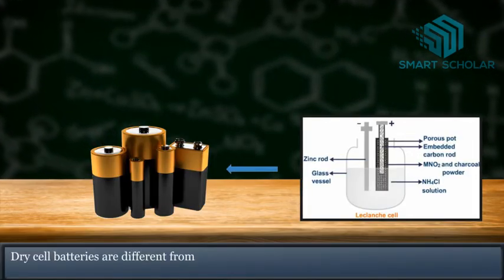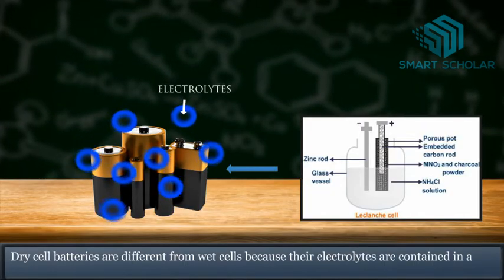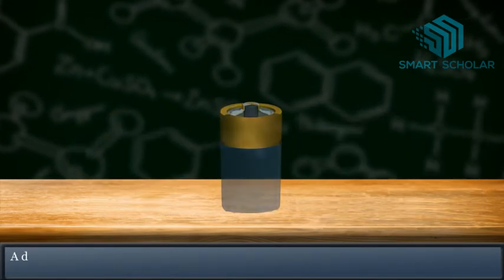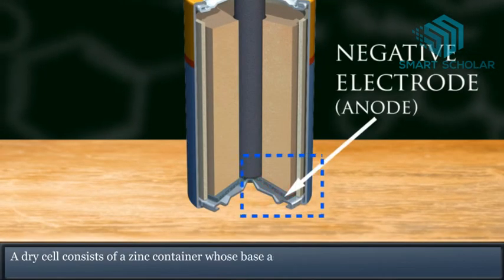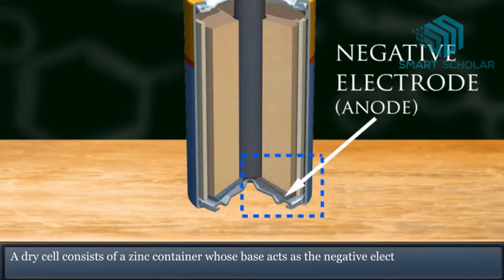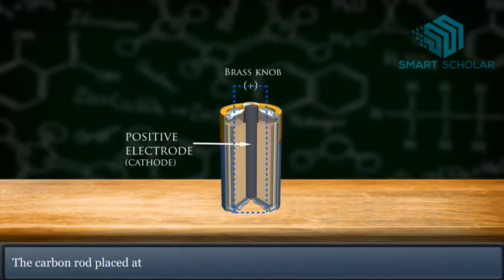Dry cell batteries are different from wet cells because their electrolytes are contained in a low moisture paste. A dry cell consists of a zinc container whose base acts as the negative electrode or anode.